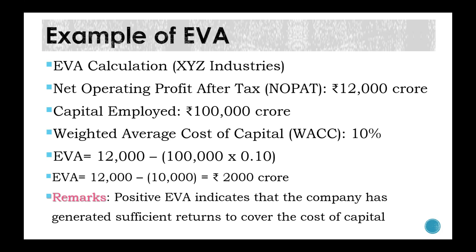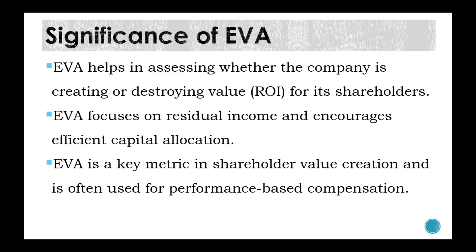EVA example 2: Using the same NOPAT of ₹12,000 crore and WACC of 10%, but with capital employed reduced to ₹1,00,000 crore: EVA = 12,000 − (1,00,000 × 0.10) = 12,000 − 10,000 = +₹2,000 crore. The positive EVA indicates that the company has generated sufficient returns to cover the cost of capital.